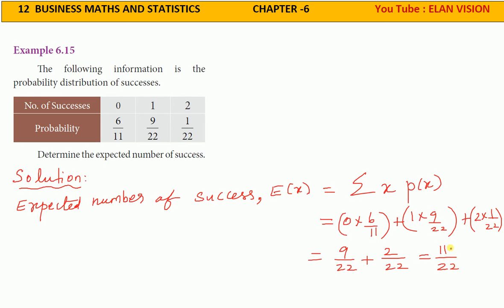So the 11 will cancel. It is 1 times 2 times. Therefore, the answer is 1 by 2.